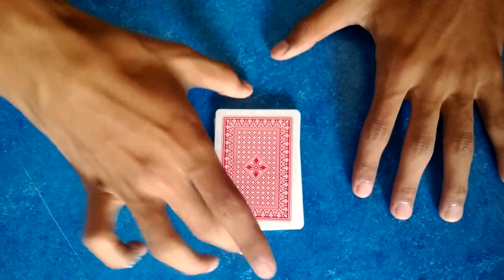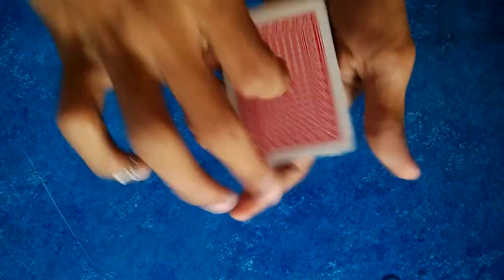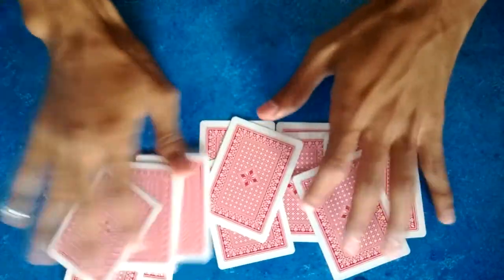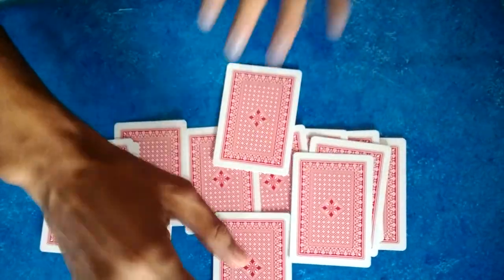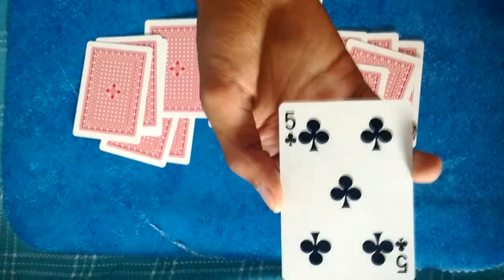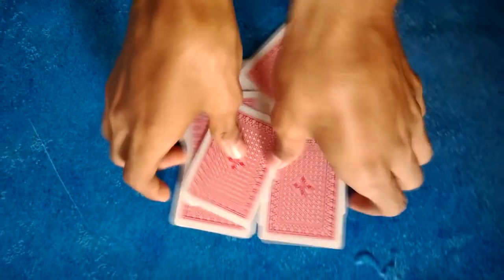So first of all you can have the spectator shuffle the cards. Then you have them select any card they want. So I'm gonna choose this card, you're not gonna see it. These are new cards and I'm gonna place it here.